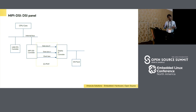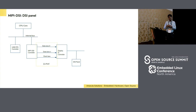How many lanes to use depends on the particular embedded application. For example, for an automotive device with a seven-inch display needing a fast interface, you can go with four lanes. For a smaller display like in a refrigerator, you can go with a two-lane device.